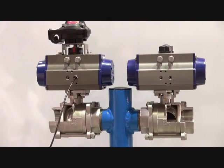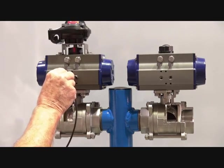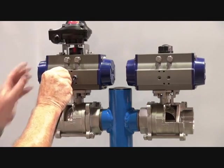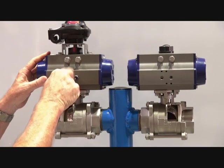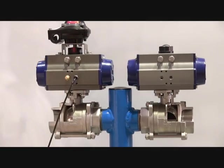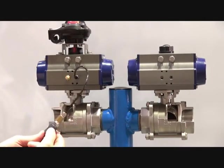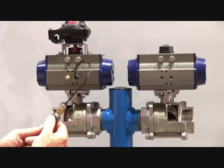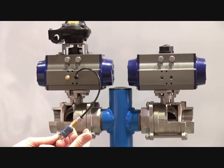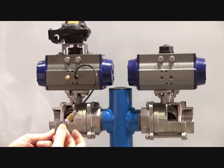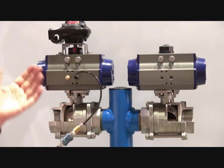I'm just going to demonstrate the single solenoid, single air supply here. I'll just put the silencer in the port here. That's what I would recommend if you're just using a single supply. I'll just operate this valve. The actuator opens. If I vent the line, the actuator is sprung closed.